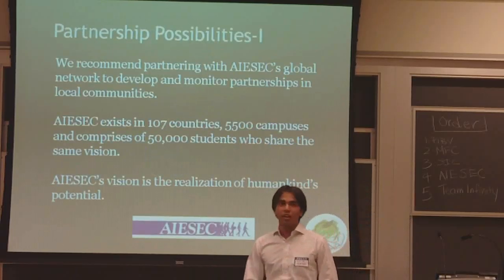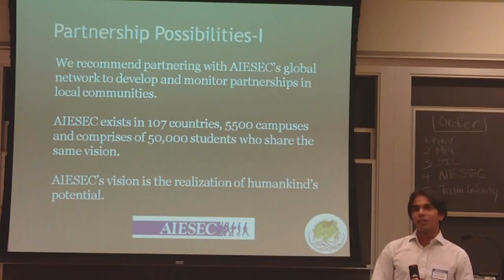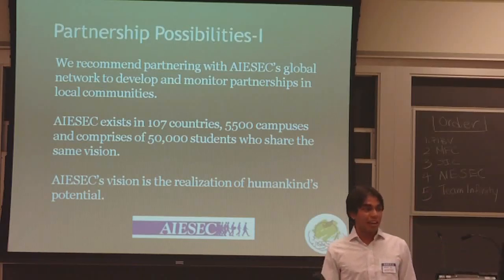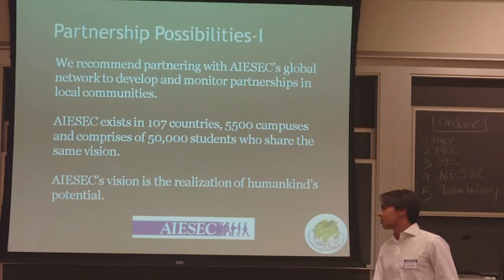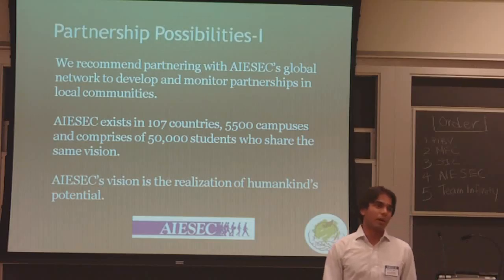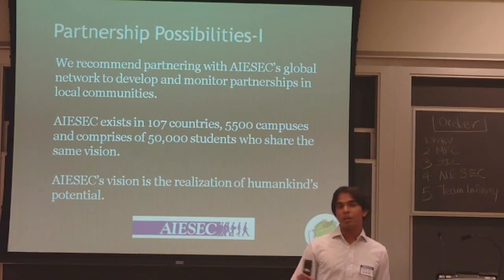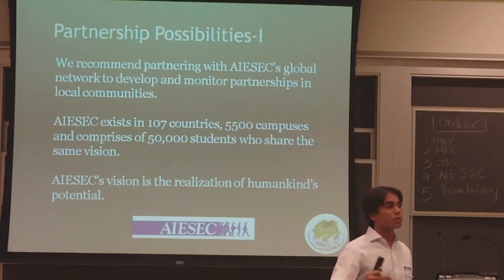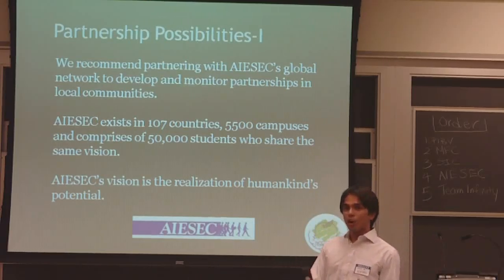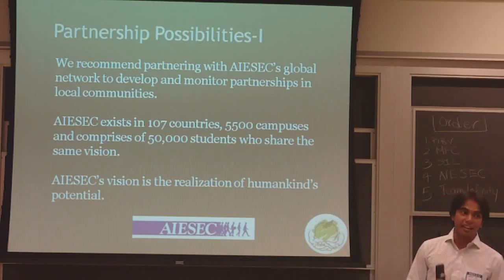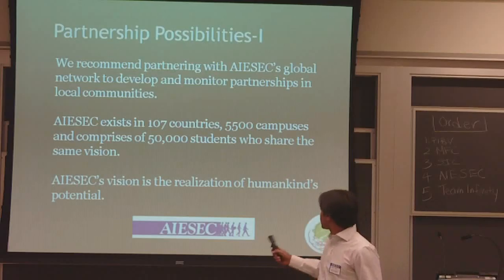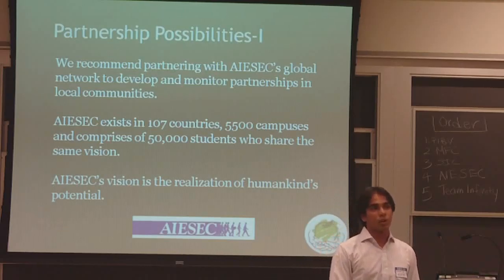The first partnership possibility we want to address is iSEC. This case struck my interest because iSEC is perfect for these organizations. iSEC exists in 107 countries, has a presence in 5,500 chapters, and has 50,000 members worldwide — that's a lot of manpower and diversity. If Ecology can use iSEC not as a partner for channeling donations, but as a partner to reach out to local communities, societies, and projects all over the world, and work with them to establish a standard for these processes, Ecology can be locally responsive and gain credibility. iSEC's vision is the realization of development and extension, and we think it aligns with what Ecology wants to do.